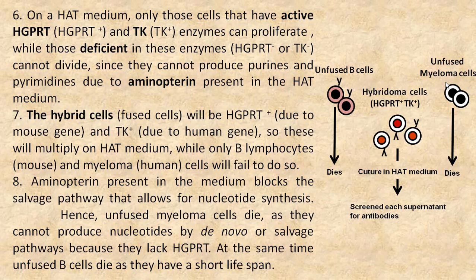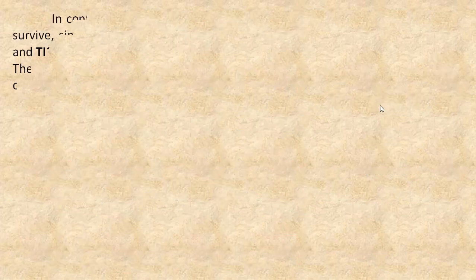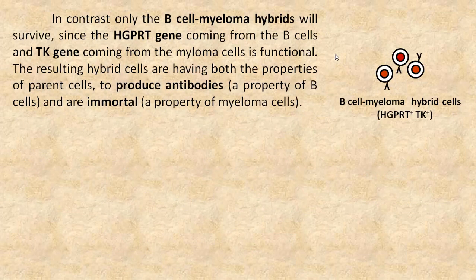Aminopterine present in the medium blocks the salvage pathway that allows for nucleotide synthesis. Hence, unfused myeloma cells die as they cannot produce nucleotides by de novo or salvage pathways because they lack HGPRT. At the same time, unfused B cells die as they have a short lifespan. In contrast, only the B cell-myeloma hybrids will survive, since the HGPRT gene coming from B cells and the TK gene coming from myeloma cells is functional. The resulting hybrid cells have both the properties of parent cells: to produce antibodies and to be immortal.